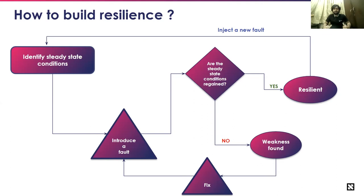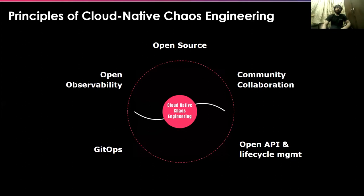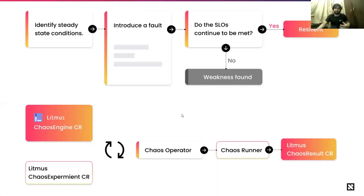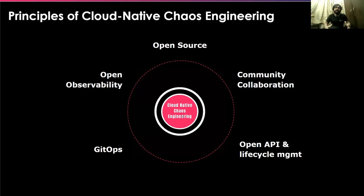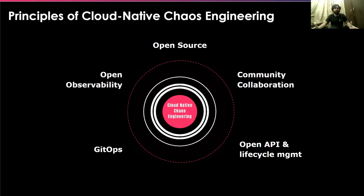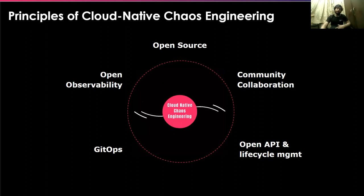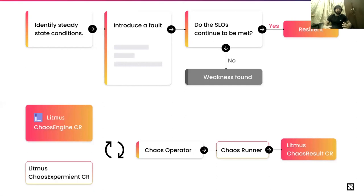This is a continuous process. If your system is resilient to a chaos test, you inject a new fault to test how the system reacts to a different kind of failure. If there's a weakness, you fix it, introduce the fault again, and the process continues in a cyclic motion — because resiliency is an ongoing process and systems can never be completely resilient. With this in mind, the Litmus Chaos project devised principles driving cloud-native resiliency: open source, community collaboration, open API and lifecycle management, GitOps, and open observability.